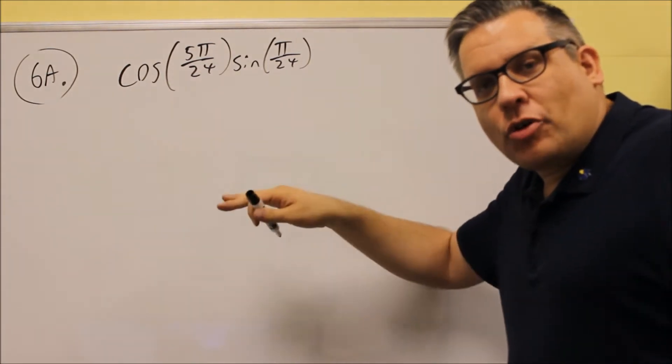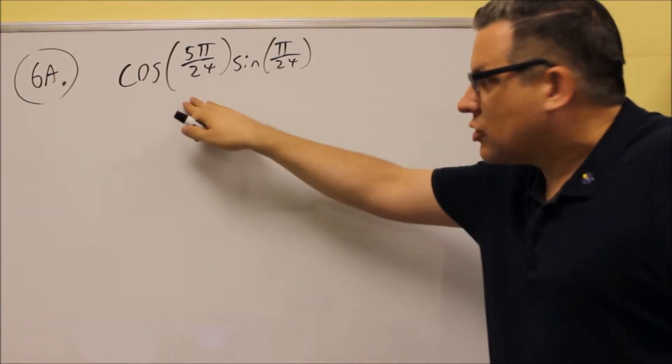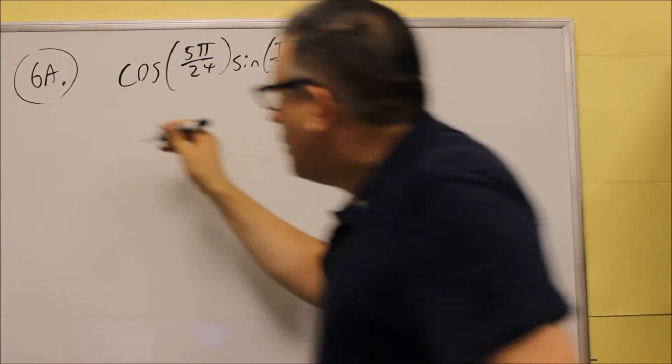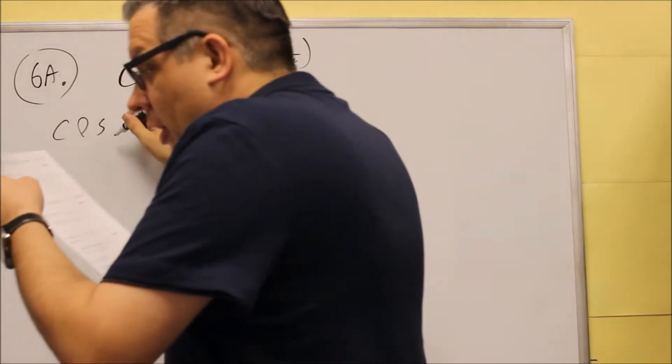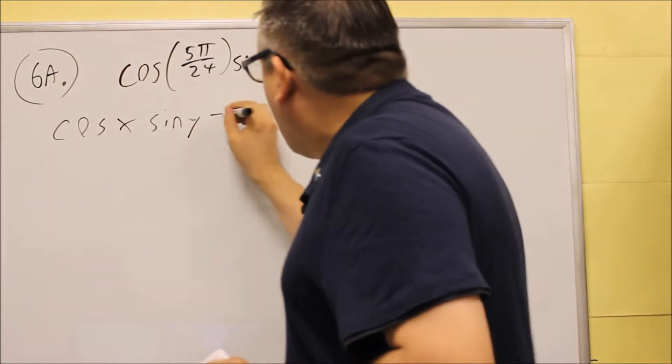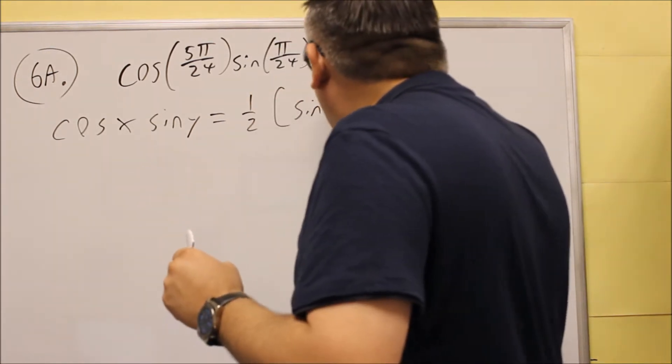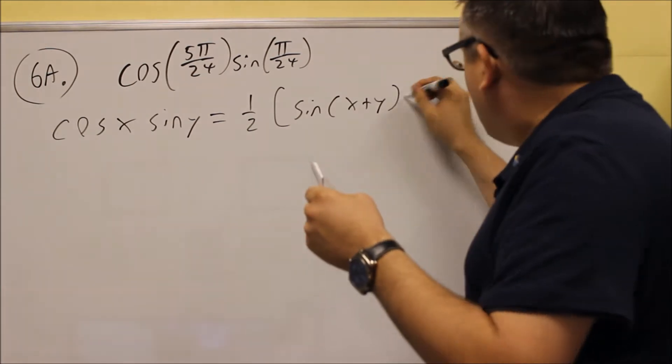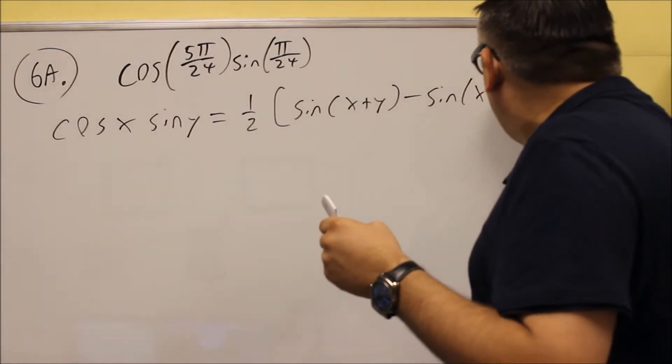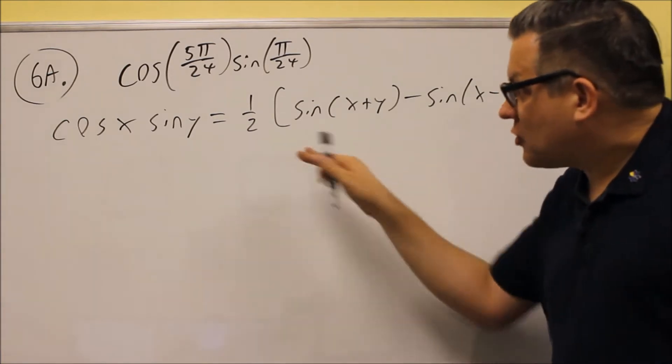So you want to be sure you're familiar with all the versions of that formula. The one in particular that we're going to look at is the one that has cosine sine. So we want to look at cosine x sine y, and this formula is one-half sine of x plus y, and then minus sine of x minus y. So this is the formula that we want to use for this specific problem.